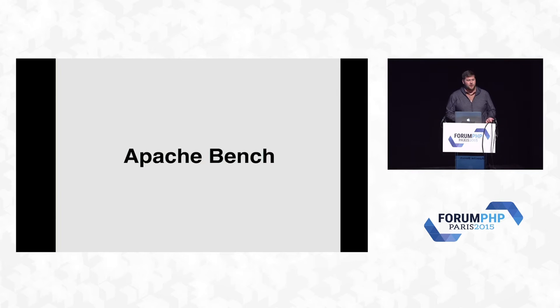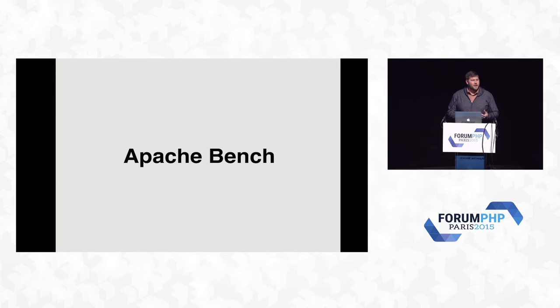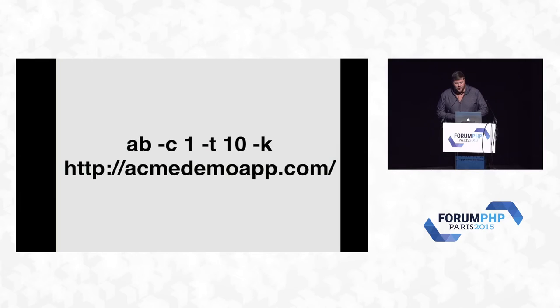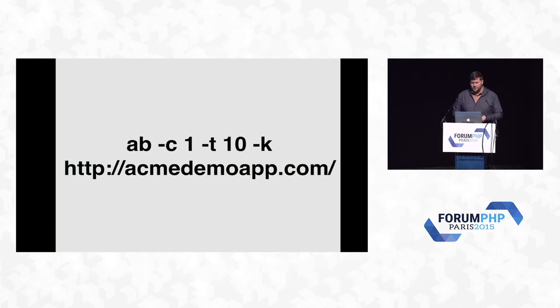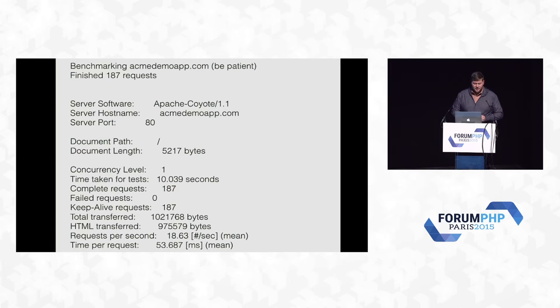The first tool is Apache Bench. If you've ever installed Apache, you can apt-get install apache2-utils and have access to the Apache Bench command. Apache Bench is extremely easy to load test a single endpoint. A quick example: you run AB with -c for concurrency. In this example, I'm limiting concurrency to one concurrent HTTP request for 10 seconds against AcmeDemoApp.com. What you see is 18 requests per second with an average time per request of 53 milliseconds. This is not a real load test because we're artificially limiting to one concurrent request, but the goal is to find at which point latency rises for each machine.